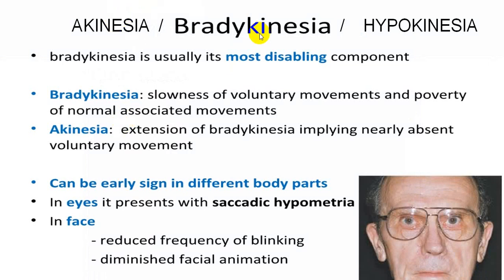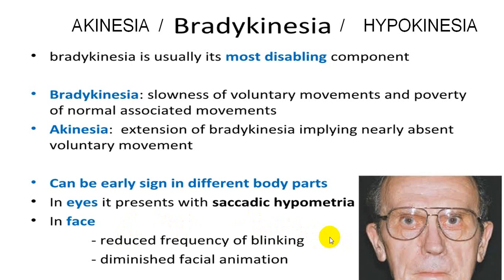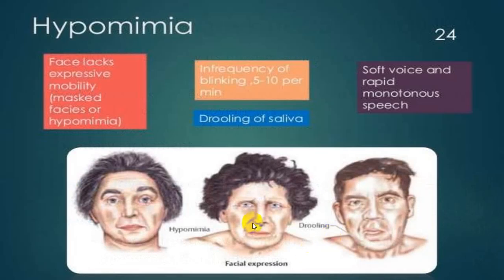Bradykinesia is the most important symptom, producing maximum disability. Bradykinesia is slowness of voluntary movement; akinesia is an extension of bradykinesia where there is nearly absent voluntary movement. It will be an early sign, observable in gait and on the face — where there is reduced frequency of blinking, which is why it is described as mask-like face. There is also one frequently used term — hypomimia — meaning the face lacks expression and mobility. There will be drooling of saliva, infrequent blinking, and a soft, monotonous voice, which are very peculiar in Parkinson's disease.